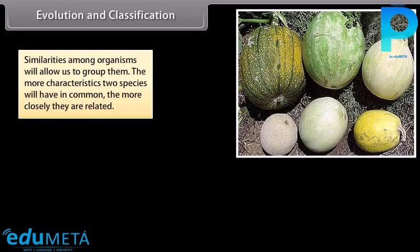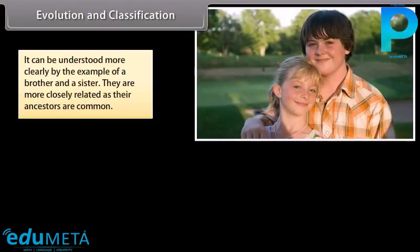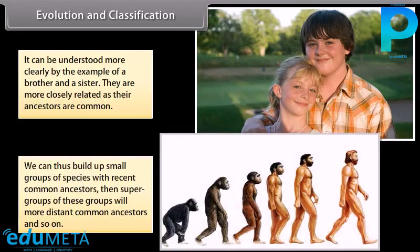Similarities among organisms allow us to group them. The more characteristics two species have in common, the more closely they are related. The more closely they are related, the more recently they will have had a common ancestor. For example, a brother and a sister are more closely related as their ancestors are common. We can build up small groups of species with recent common ancestors, then supergroups of these groups with more distant common ancestors, and so on.